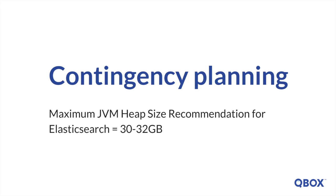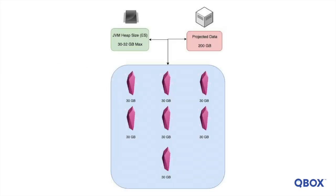Our customers expect their businesses to grow and their data sets to expand accordingly, so there's always a need for a contingency plan. Many users convince themselves that they'll encounter explosive growth, but most never see an unmanageable spike. We all want to minimize downtime and avoid re-sharding. If you worry about rapid data growth, we suggest a focus on a simple constraint. The maximum JVM heap size recommendation for Elasticsearch is approximately 30 to 32 gigabytes. This is a solid estimate on the limit of your absolute maximum shard size. For example, if you really think it's possible that you could reach 200 gigabytes, but not much further without other infrastructure changes, then we recommend an allocation of 7 or 8 shards at most.